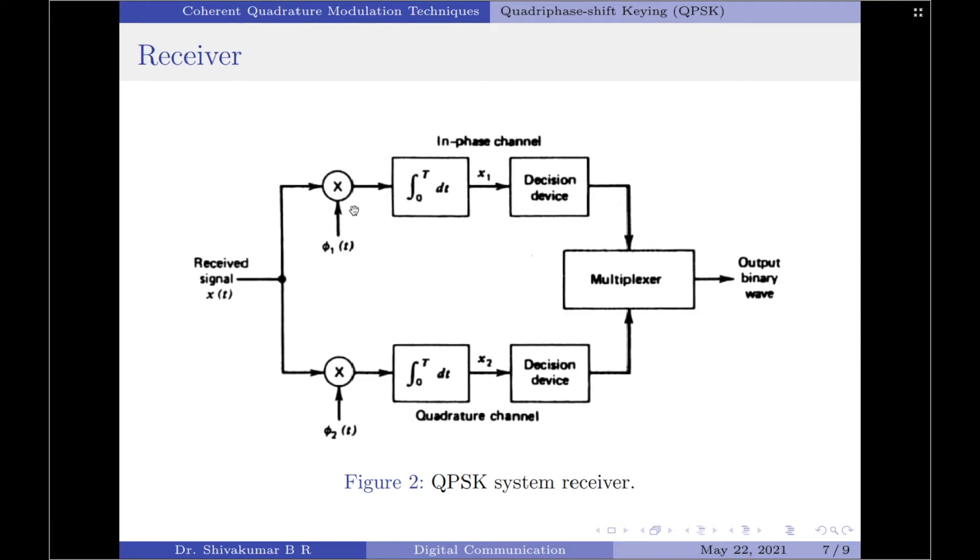Let the upper path be called the in-phase channel and the lower path be called the quadrature phase channel. Let the correlator outputs in the in-phase and quadrature phase channels be denoted by X1 and X2 respectively.